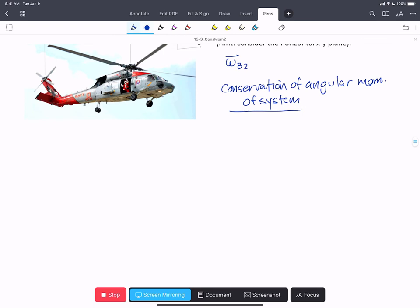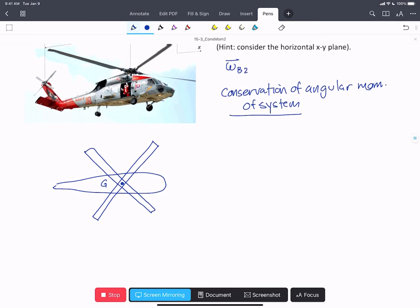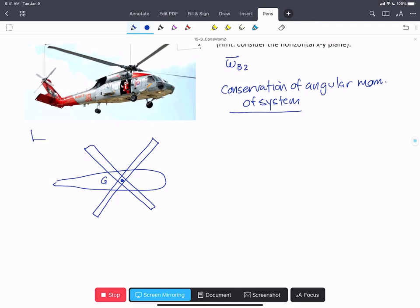So we're just going to sketch this system. We've got a helicopter body and we've got a rotor blade system. And we're told that the rotor sits right on top of g.